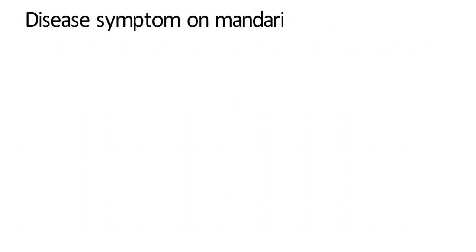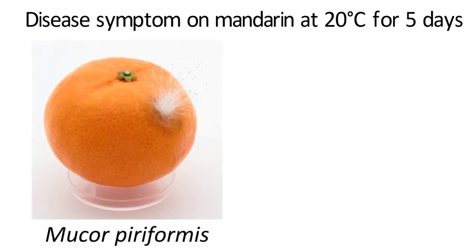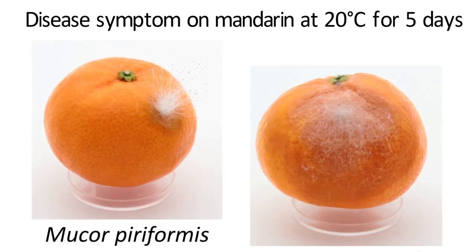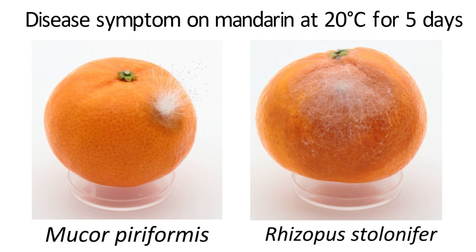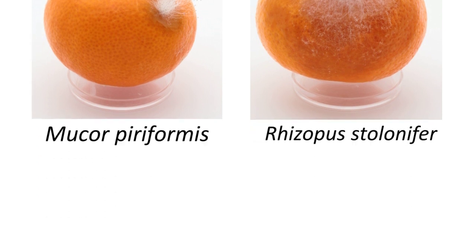Here is the disease symptom on mandarin fruits. Mucor piliformis developed long shining sporangiophores, on the top of which bear blackish sporangia. Mycelia of Rhizopus stolonifer, on the other hand, creep on the surface, making large lesions on the skin.